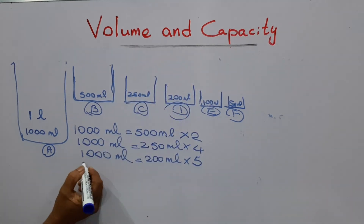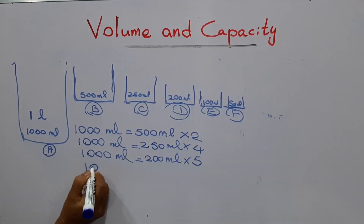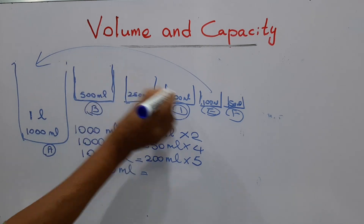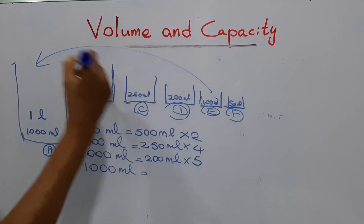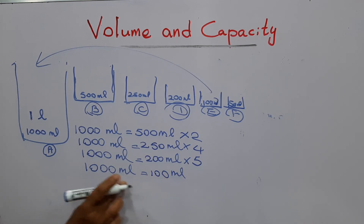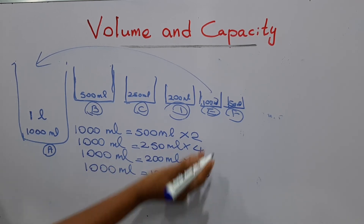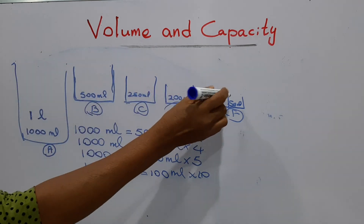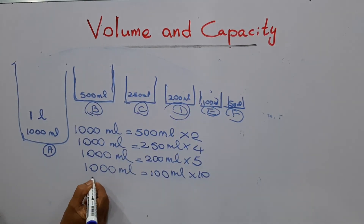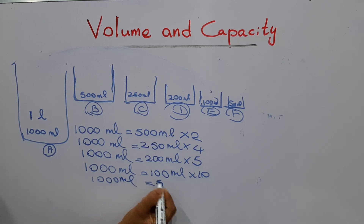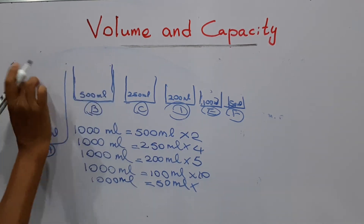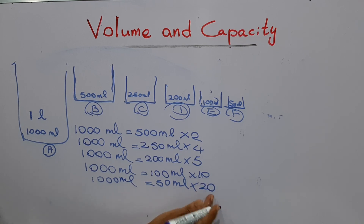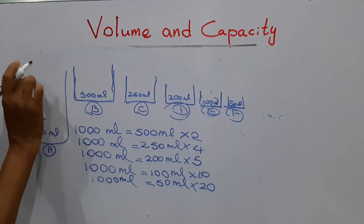Then we will move to the E container. We are going to fill the one-liter container using the one-hundred-milliliter container E. How many times? How many hundreds are there in one thousand? Ten times. Next, the last one: the F container, which holds fifty milliliters. How many times do we have to put water to fill this container? How many fifties in one thousand? That means twenty — we have to put water twenty times.